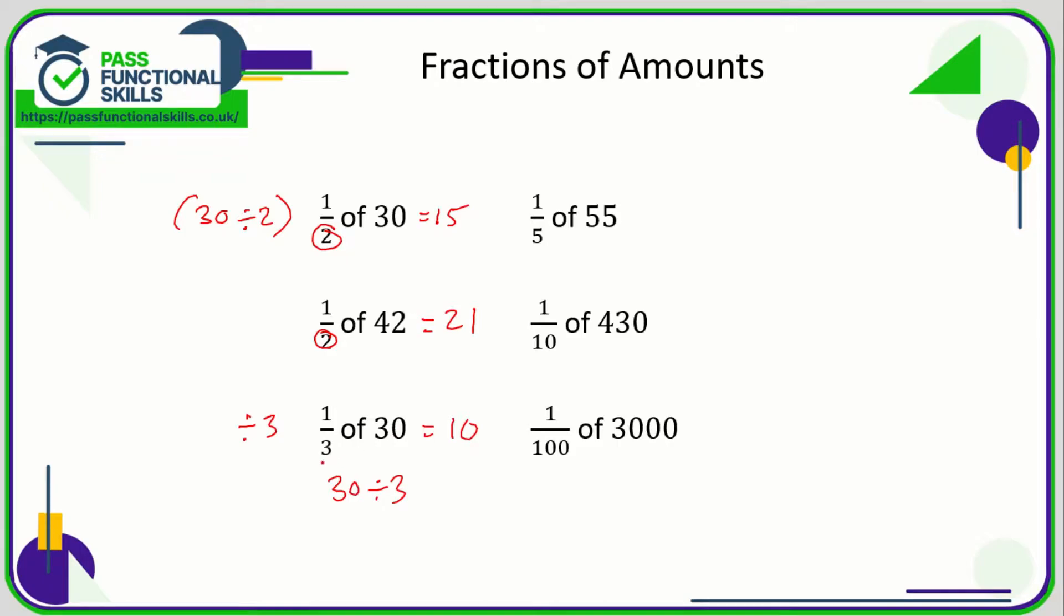So all we're doing is we're dividing by the number on the bottom. So 1/5 of an amount is the amount divided by 5. So a fifth of 55 is 55 divided by 5 which is 11.